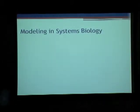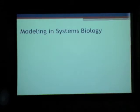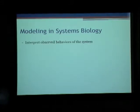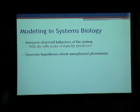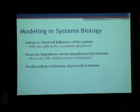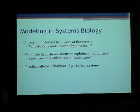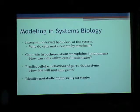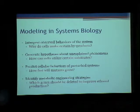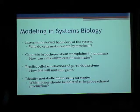Modeling of systems biology is important because it can answer a lot of questions. We can try and interpret observed behaviors of systems and answer questions such as why do cells make certain byproducts. We can generate hypotheses about unexplained phenomena, such as how can cells utilize certain substrates. We can predict cellular behaviors and predict how fast mutants can grow. And one of the most important uses is identifying metabolic engineering strategies — answering questions such as which genes should be deleted to improve production of a certain product, such as FMR.